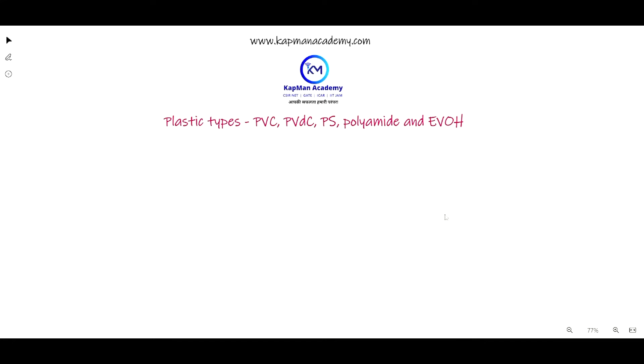Hello students, welcome back to Capman Academy. Today we are going to talk about other types of plastic packaging materials such as polyvinyl chloride, polyvinylidene chloride, polystyrene, polyamide, and ethylene vinyl alcohol.